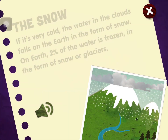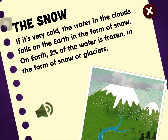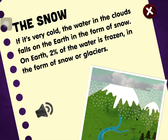The snow. If it's very cold, the water in the clouds falls on the earth in the form of snow. On earth, 2% of the water is frozen in the form of snow or glaciers.